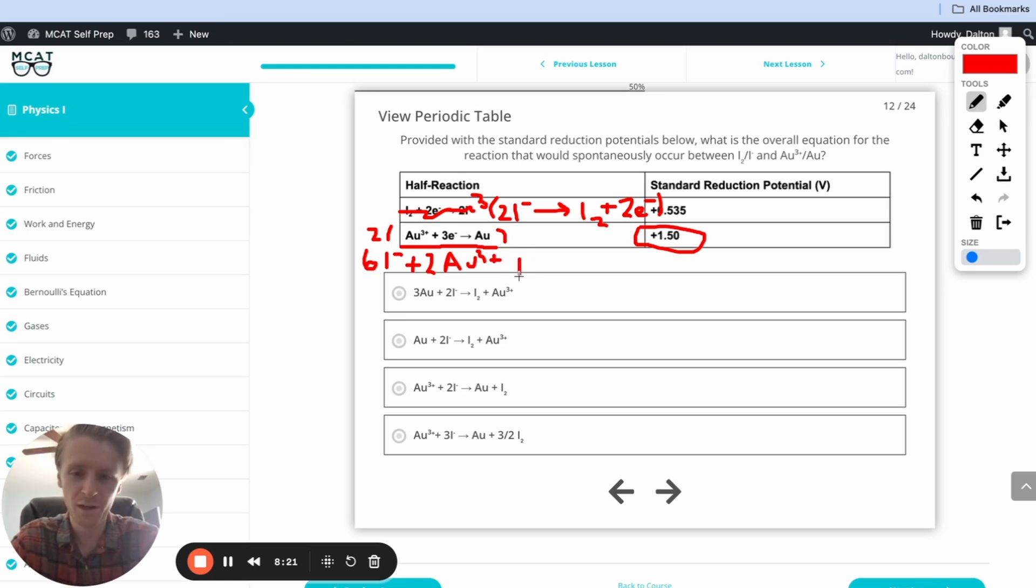Perfect. And just like we were hoping, we're going to have six electrons. Then coming on to the other side, similar math. We're going to have three I₂, six electrons, and two gold right here, two Au.